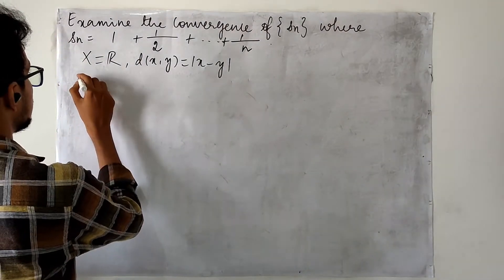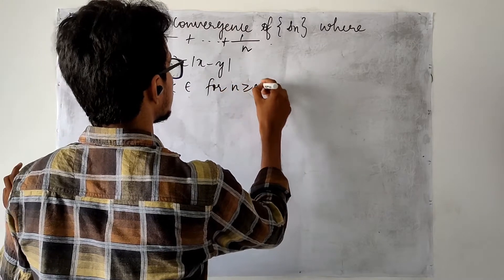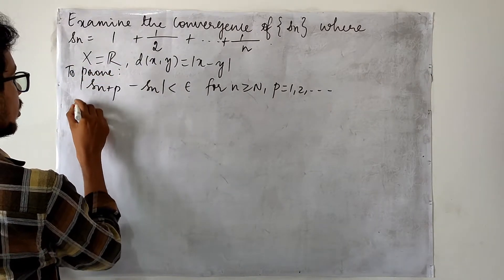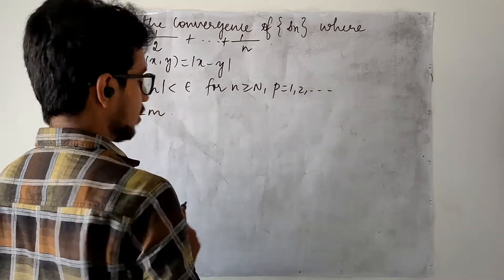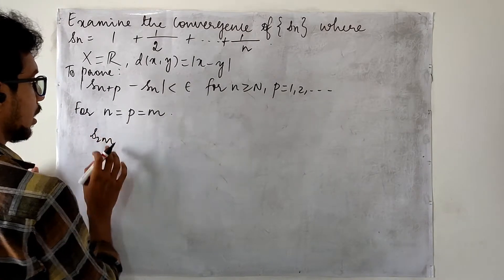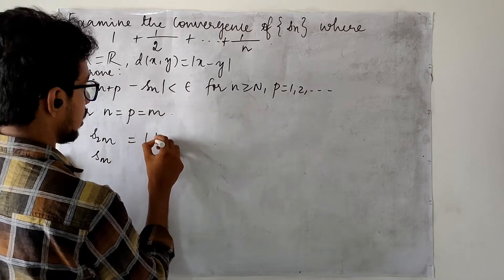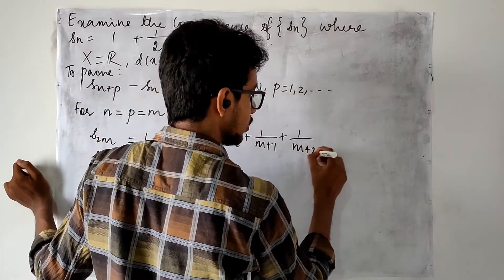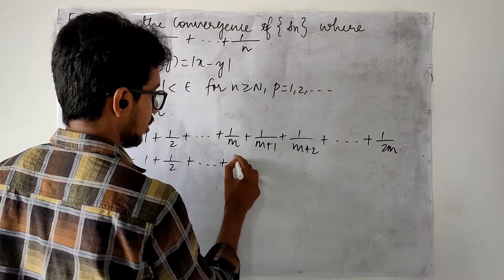First let me consider, for n bigger than or equal to N and p equal to 1 onwards — this is what we need to prove. I am going to choose n equals p which equals some m. So what is S(2m)? I will identify what S(2m) and Sm are. S(2m) is 1 plus 1/2 plus ... plus 1/m plus 1/(m+1) plus 1/(m+2) and it goes till 1/(2m). And Sm is simply 1 plus 1/2 plus ... plus 1/m.